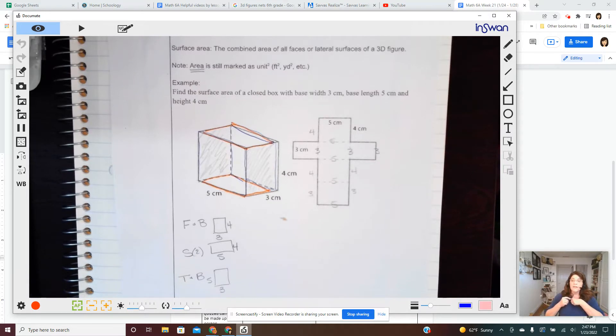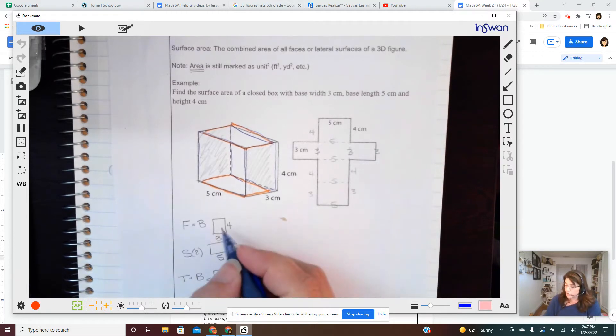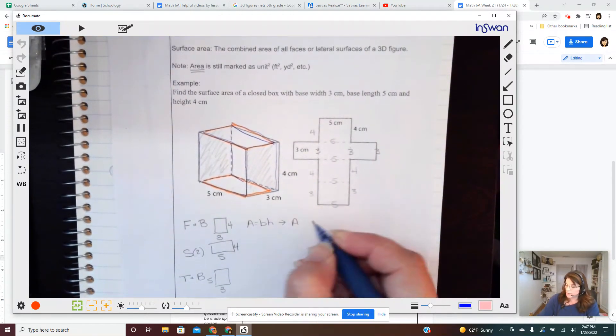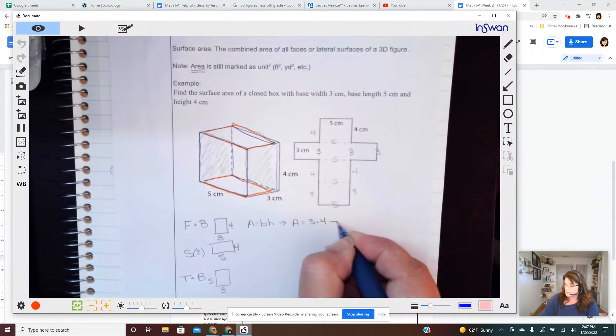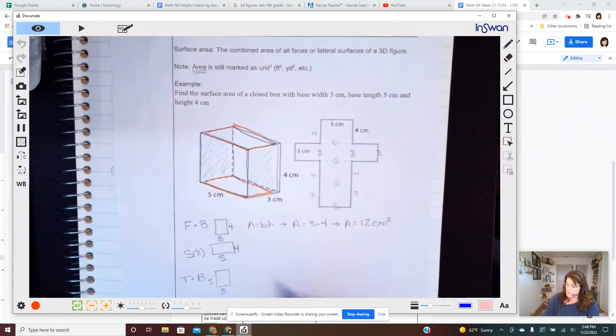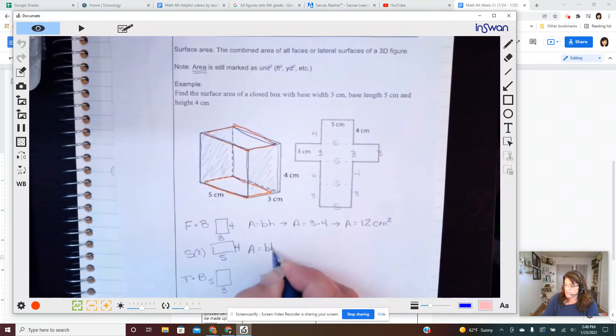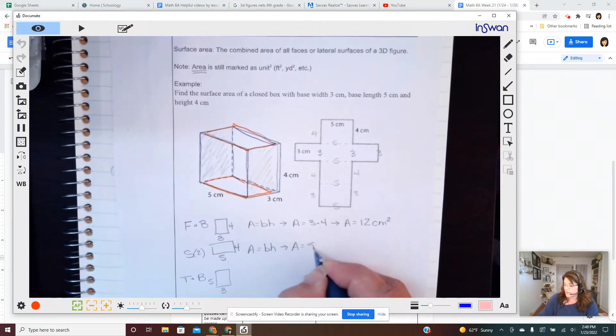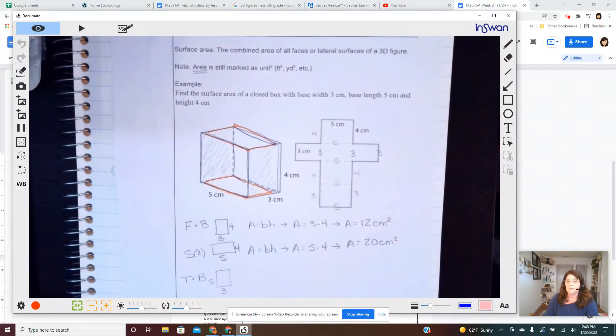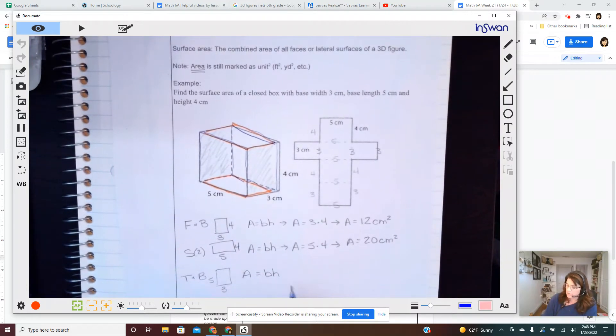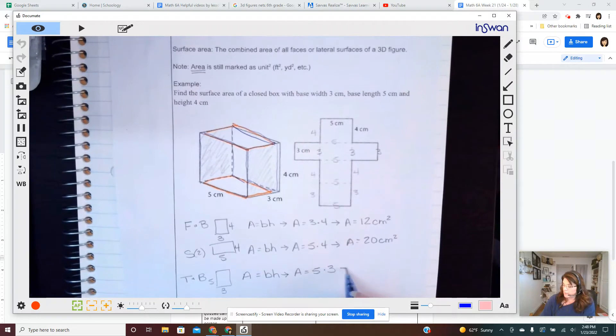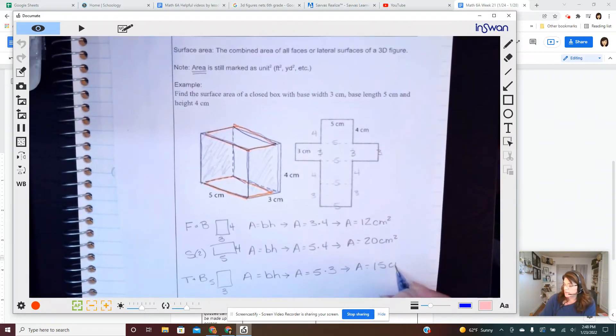And by doing that, it's my hope that you can then break it apart. Area equals base times height. Area equals 3 times 4. Area equals 12 centimeters squared. Do the next one. Area equals base times height. Area equals 5 times 4. Area equals 15 centimeters squared.